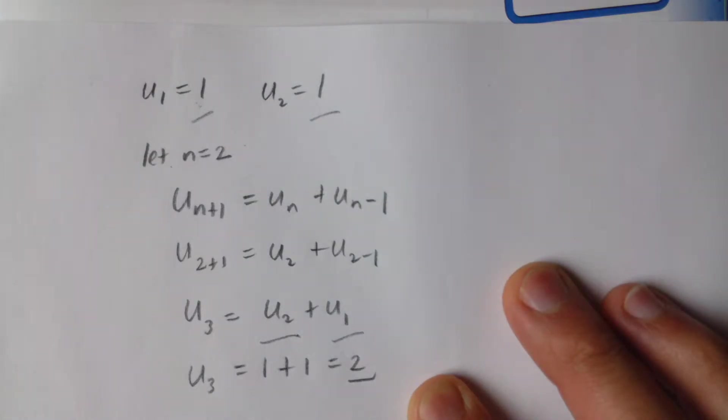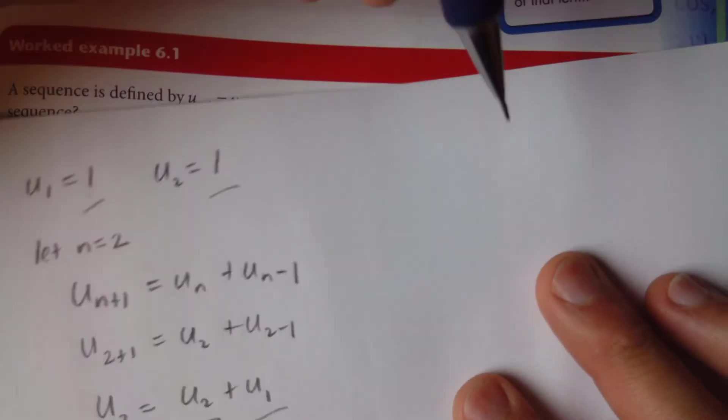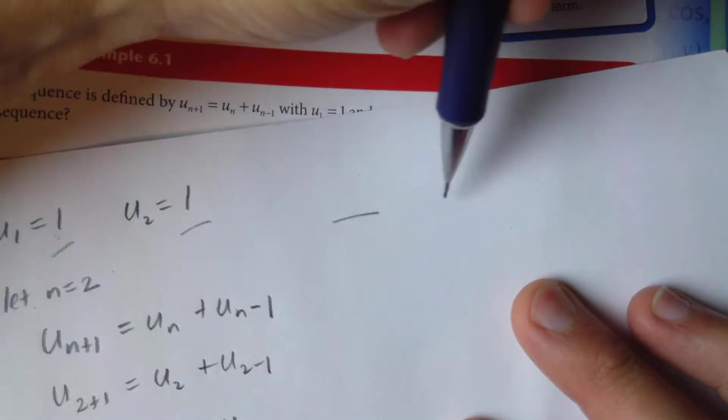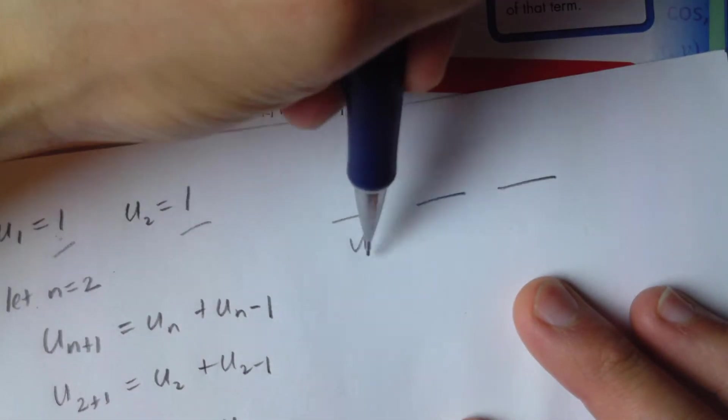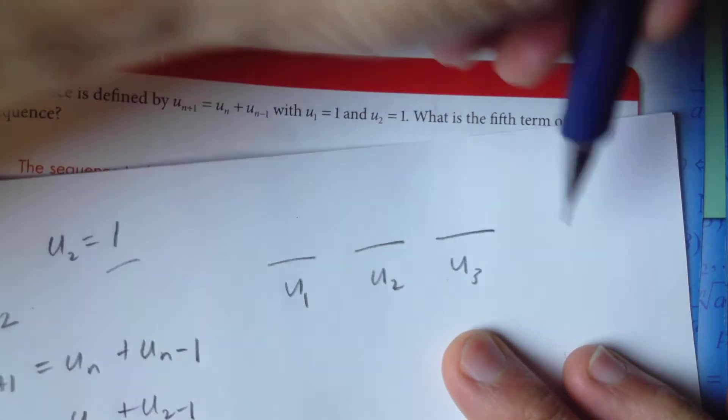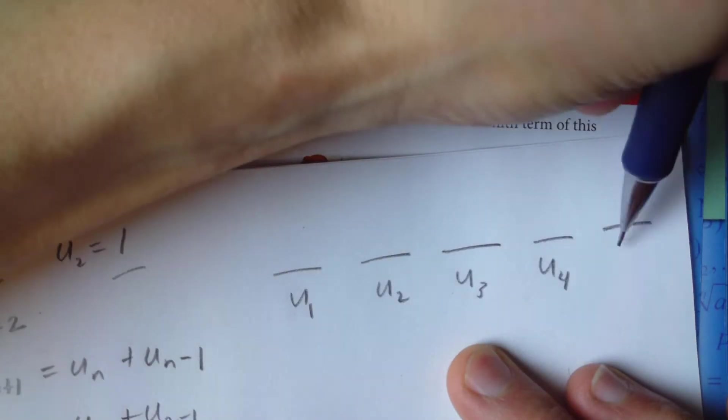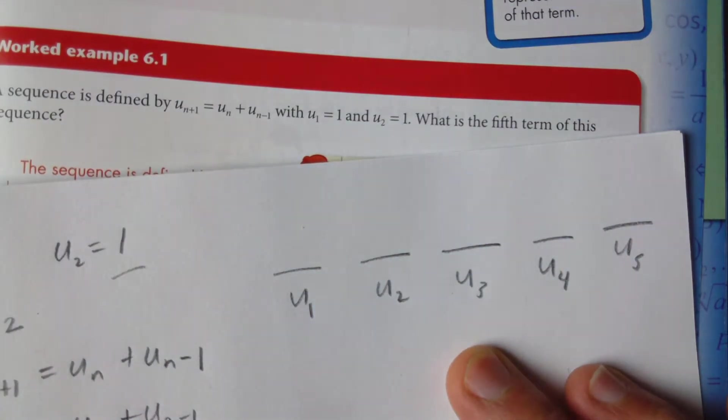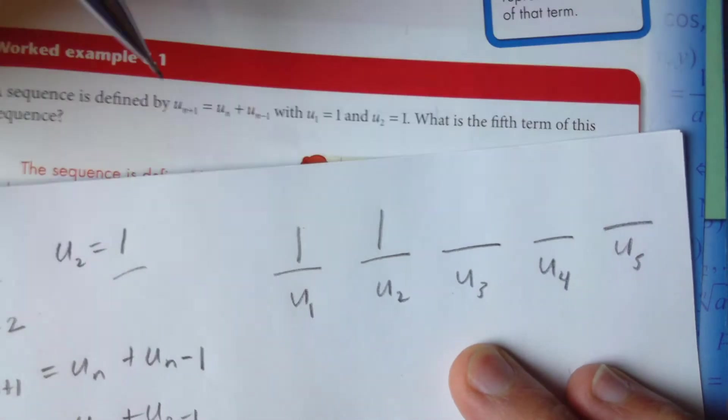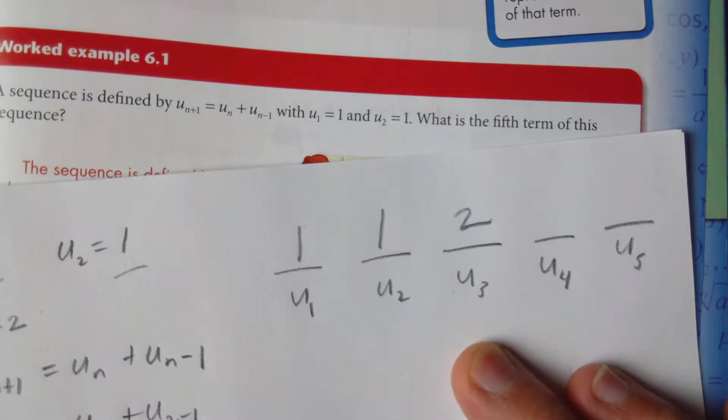So now there we have it. We have u1, u2, and now even u3. If we write out the terms this way, 1, 2, 3, we have u1, u2, u3, u4, and the question is asking for u5. So we know this is 1, this is 1, and u3 happens to be 2. We solved it algebraically.